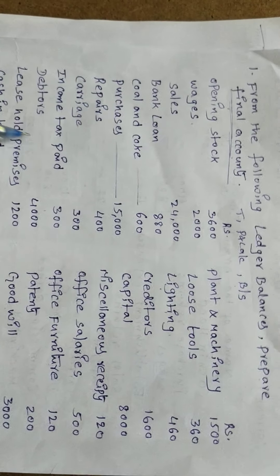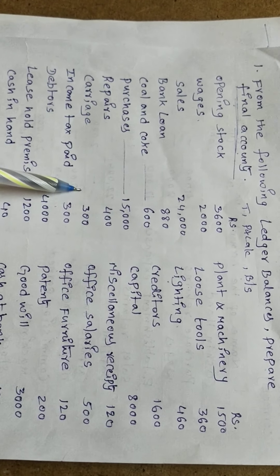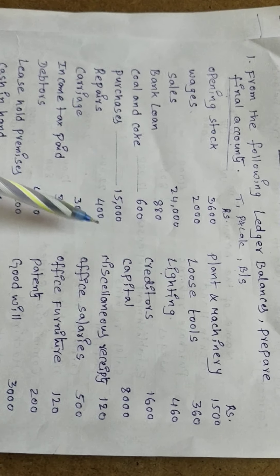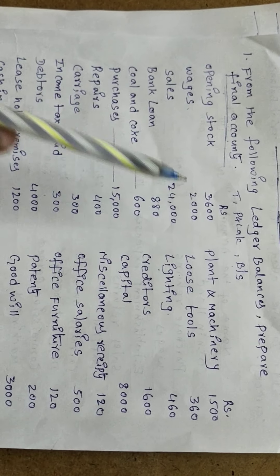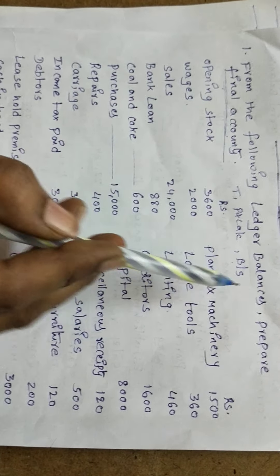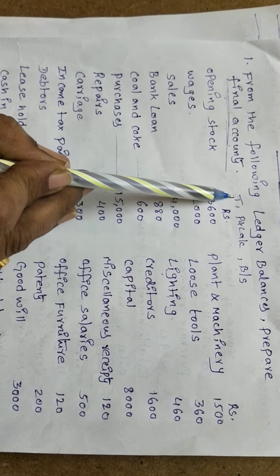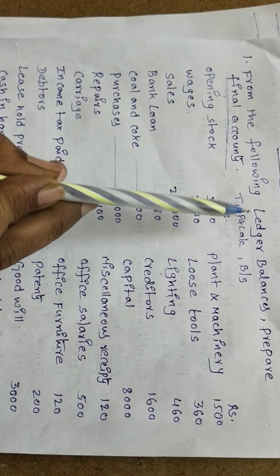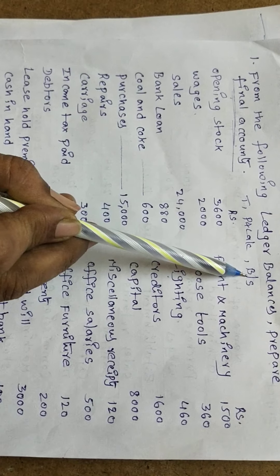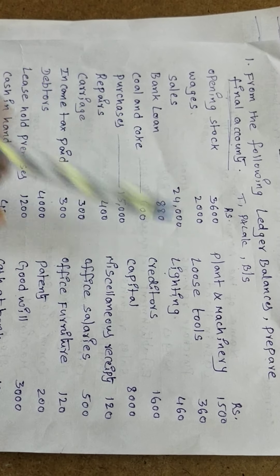Before beginning the problem, listen carefully: the items appearing in the problem should be recorded only one time — either in the trading account, or the profit and loss account, or the balance sheet.